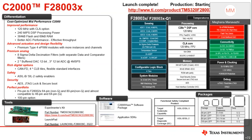For tooling, the control card is available on ti.com today so you can get your hands on it. The LaunchPad will be available towards Q2 of next year, post production timeline. From a software standpoint, we have C2000Ware as our foundation software, already available on ti.com with support for this device. For application SDKs, we have the digital power SDK and the motor control SDK, with reference design support for this device available by end of this month.